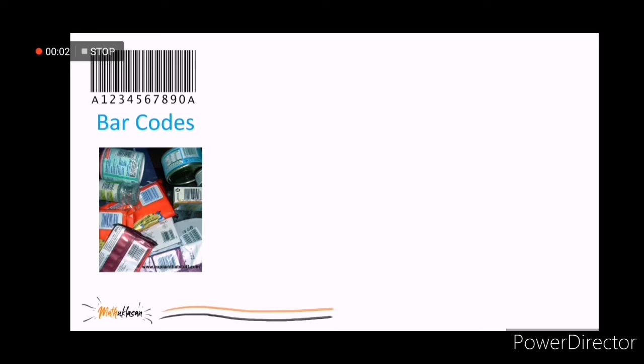A barcode is a readable optical label that contains information about the item to which it is attached. This is what the cashier in the grocery uses to include each item in the transaction.